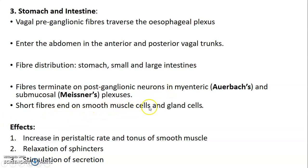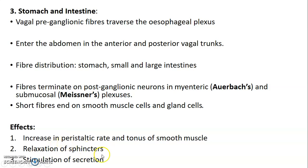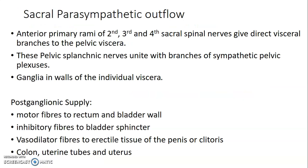The effect of parasympathetic innervation of the stomach and intestines includes increased peristaltic rate. Parasympathetic stimulation causes increase in peristalsis and increase in the tone of smooth muscles. There is also relaxation of sphincters, as well as stimulation of secretions from intestinal glands. That covers the cranial aspect of the parasympathetic pathway, but remember parasympathetic also originates from some sacral portions.